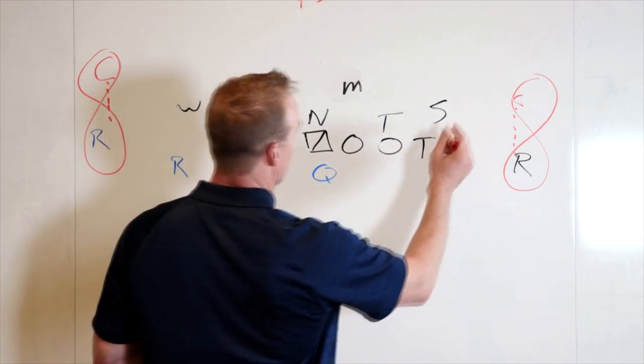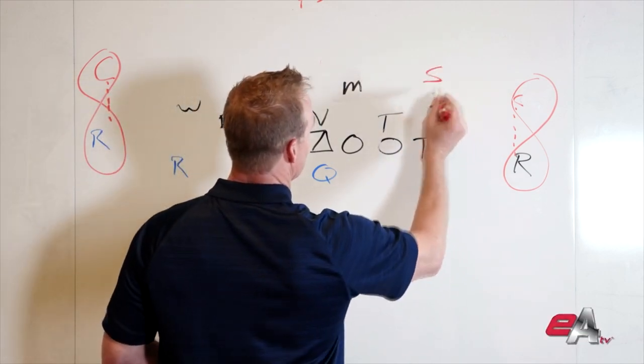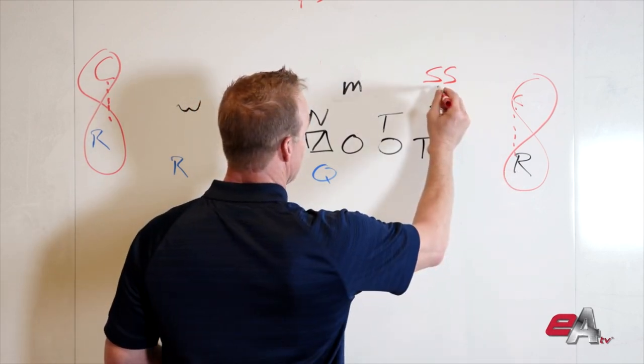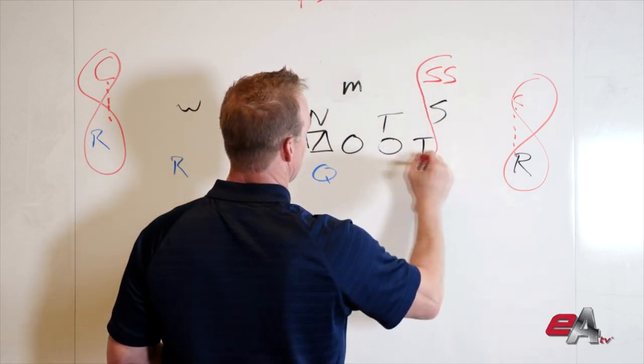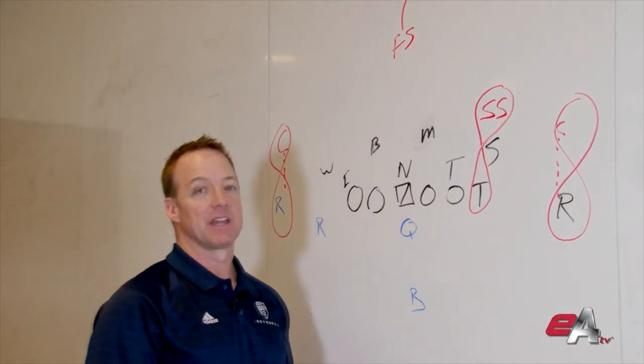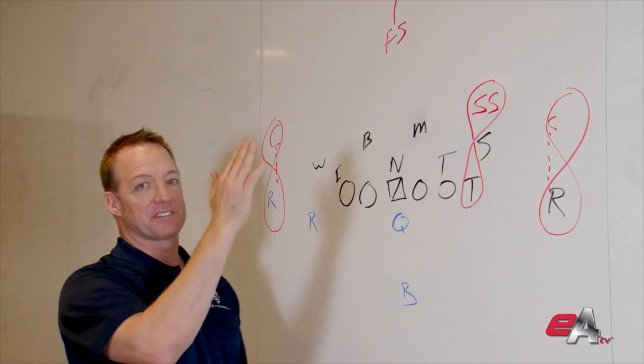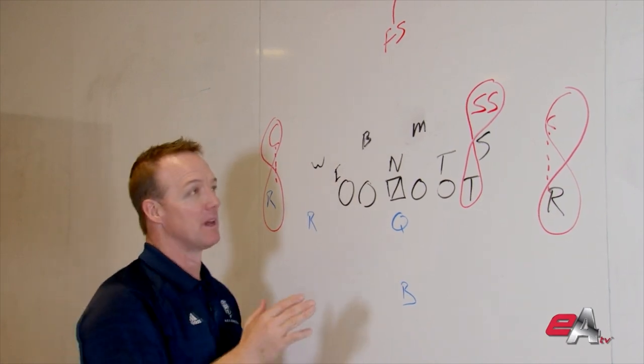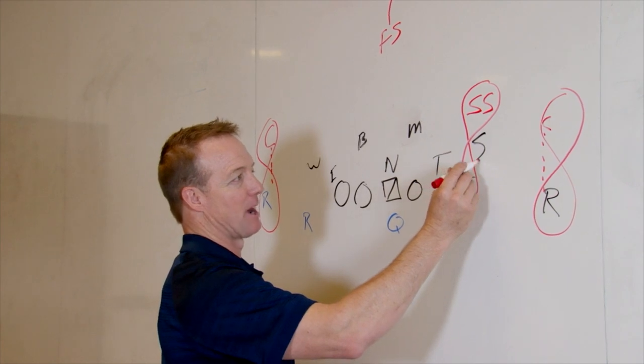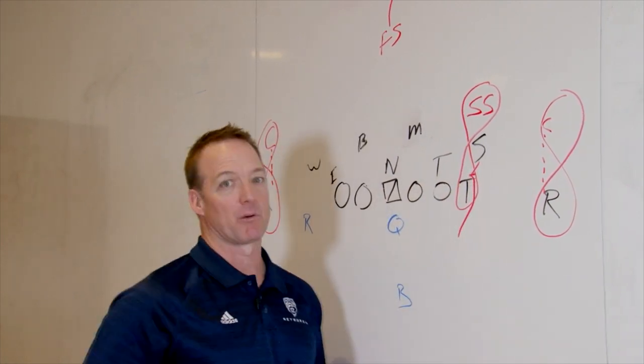So your strong safety will be manned to the number two receiver to his side. So in this case, strong safety will be manned to the tight end. Again, he will probably be heads up in that position because the tight end has a two way go. So he's going to be heads up in this defense. This Sam is going to try to help him out by getting a little jam on that tight end before he rushes.